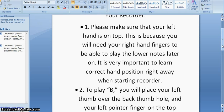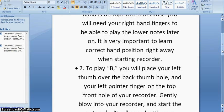To play B, you will place your left thumb over the back thumb hole and your left pointer finger on the top front hole of your recorder.